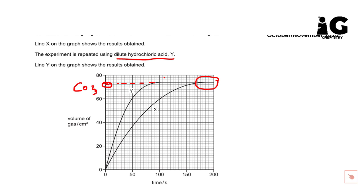It means both of them produce same number of moles of carbon dioxide gas. It means also number of moles of both acids, acid X and acid Y, should have the same number of moles, but Y is steeper than X. So it means Y is more concentrated than X.